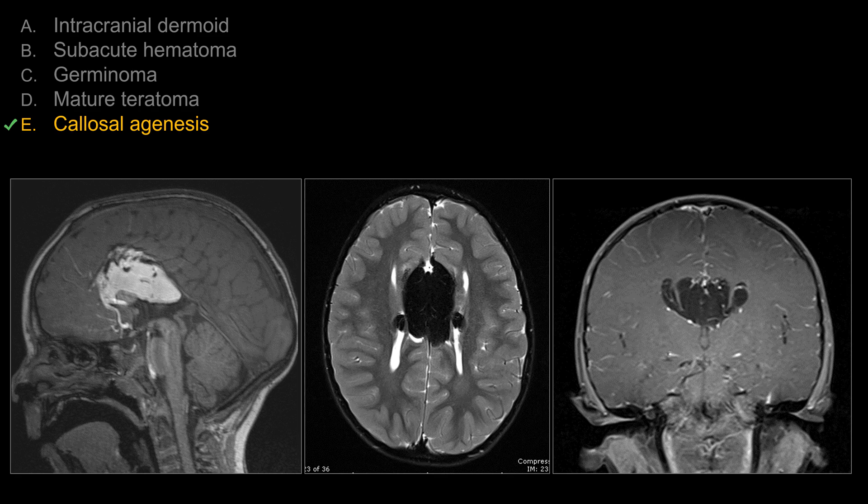The best choice here is E, callosal agenesis, or the most severe form of callosal malformation, callosal dysgenesis, with complete absence of the corpus callosum — so agenesis of the corpus callosum.